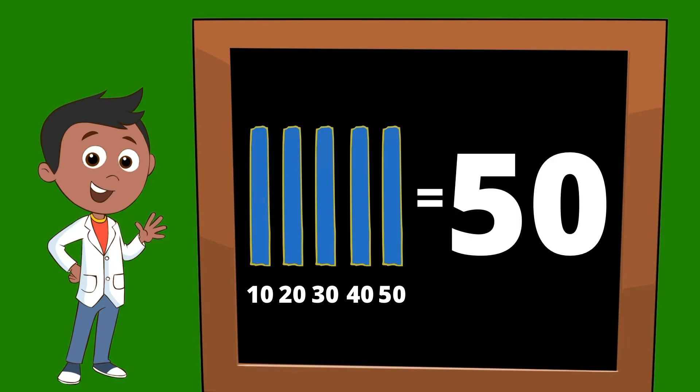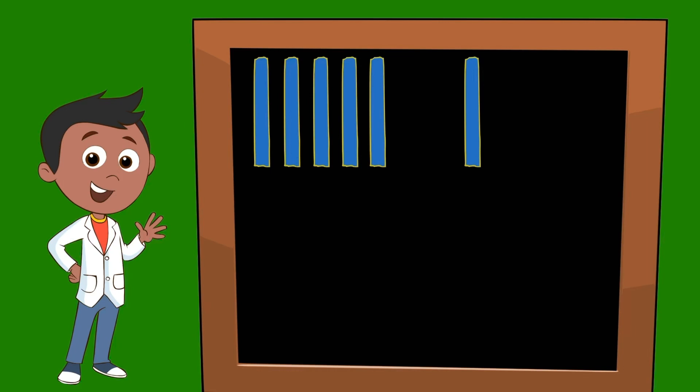We're going to add another ten stick. But you'll notice a gap after the first five. This is a great visual to help you count faster. Before the gap, there are five, so we only need to add one more, which would be six. But for now, to keep it simple, let's count all six of the ten sticks. Ten, twenty, thirty, forty, fifty, sixty.